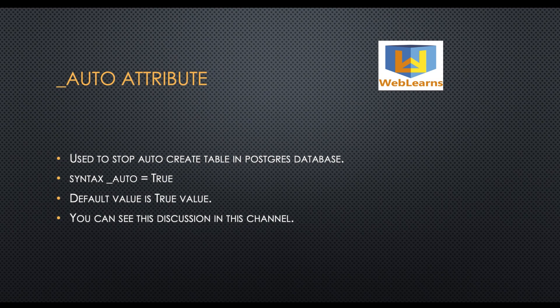The underscore auto attribute supports boolean data type — true and false — and by default it is true. If you want to create a table automatically inside PostgreSQL, this is useful. If you want to create a database view or a manual table, you can override this attribute and set it to false, so Odoo will not create the table in PostgreSQL when installing the module.